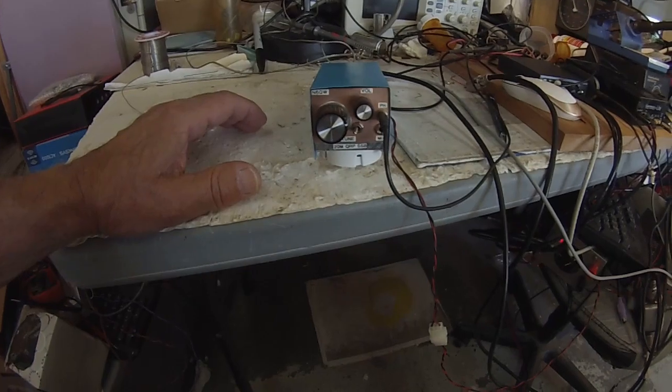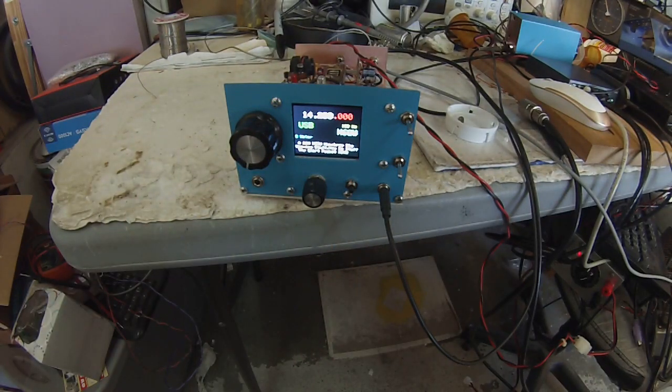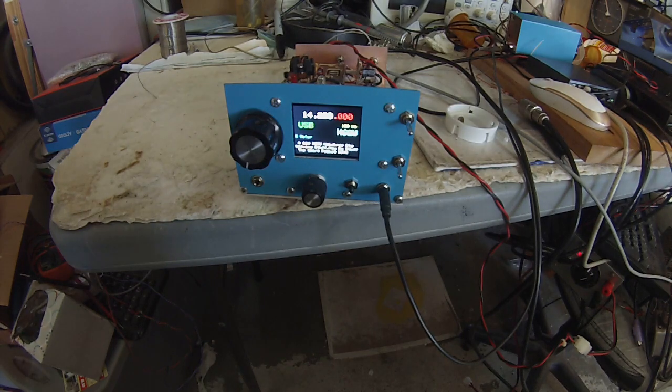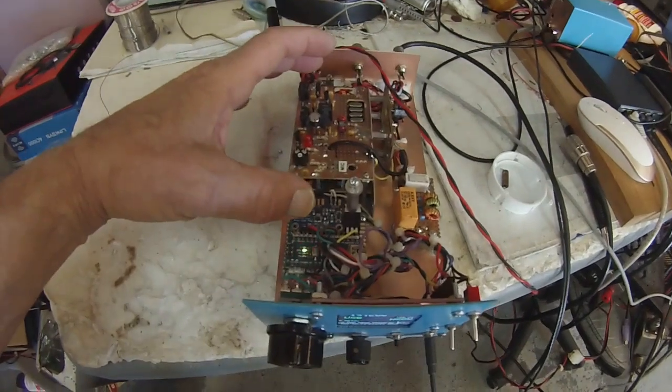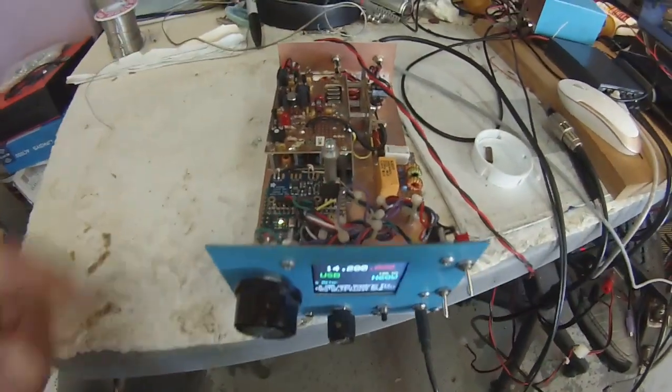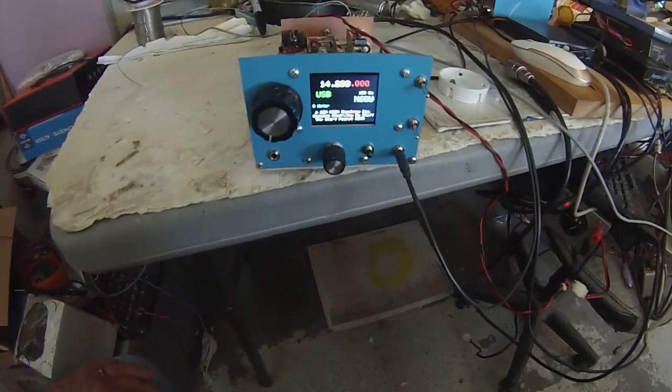Pete here, N6QW. This is the other shirt pocket. It has an RF amplifier stage. It's a little hotter than the other one. But essentially, this was pretty much it. It had the RF board on it. And I've taken the VXO out of there and now put an SI5351.